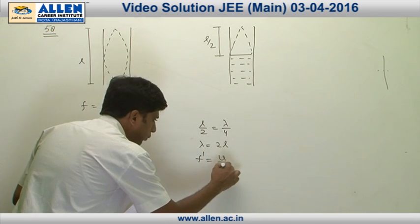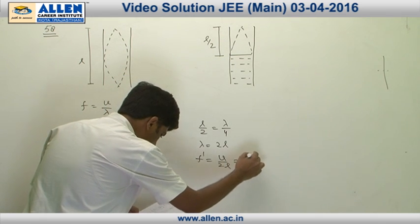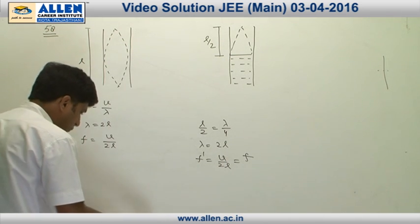That means in this case also we get the same frequency, that is v by 12. Therefore, f dash equals f, and the correct answer of this question is 1.